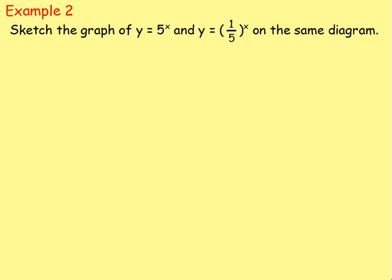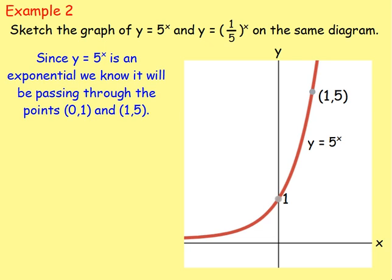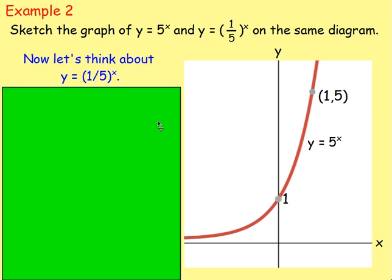Let's try example number 2. Sketch the graph of y equals 5 to the power of x and y equals one fifth to the power of x on the same diagram. This one is definitely a bit trickier. First of all, y equals 5 to the power of x — because it's a number to the power of x, it's known as an exponential. We dealt with that in the last chapter. Exponentials always pass through (0, 1) and then (1, a). In this case a is 5, so it'll pass through (1, 5). So your exponential will look just like that.